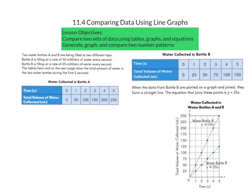For our first example, two water bottles A and B are being filled at two different taps. Bottle A is filling at a rate of 50 mL of water every second. Bottle B is filling at a rate of 25 mL of water every second. The tables here show the total amount of water in the two water bottles during the first five seconds.